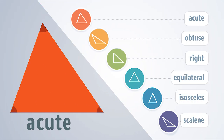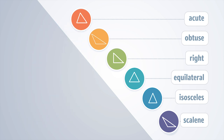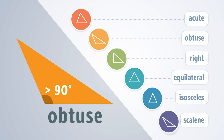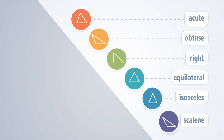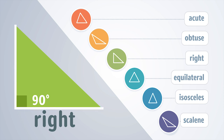Each of the three angles in an acute triangle measures less than 90 degrees. An obtuse triangle has one angle that measures more than 90 degrees. A right triangle has one right angle that measures 90 degrees. The box in the corner indicates that this angle is a right angle.